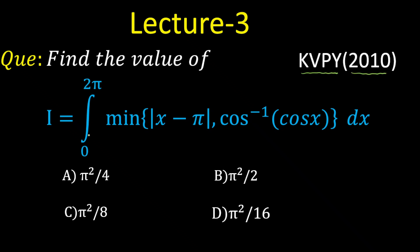Now the question is: find the value of the integral from 0 to 2π, where instead of a standard function, we have to find the minimum of |x - π| and cos⁻¹(cos x). After finding this minimum, we can calculate the integral. Four options are given, and one of them is correct.